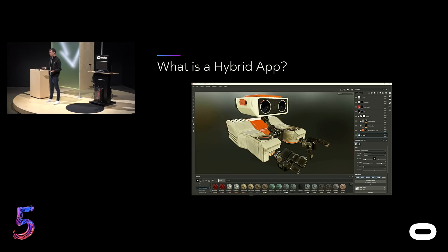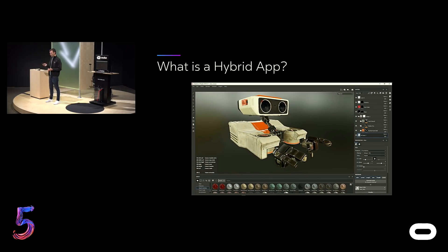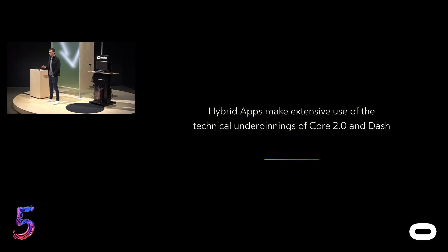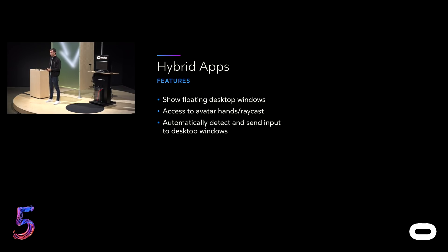Let's dig a little bit deeper into how a 2D application can move into the hybrid app state. Let's talk about some of the underpinnings of how Dash is enabling these things to work. You have three core features: floating desktop windows, which come from your virtual desktop right inside of Dash; hands and raycast so you can actually control and manipulate your objects in real time; and automatic stability to detect whether you're touching the 3D backdrop or your desktop window — all without a whole bunch of rework.